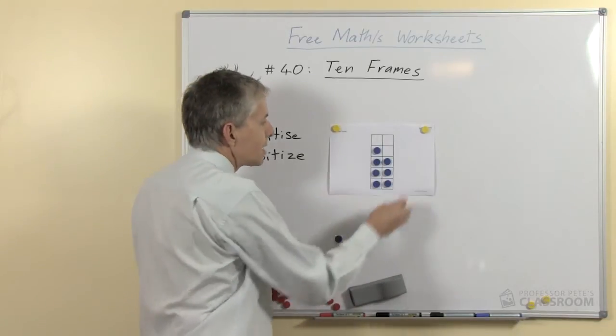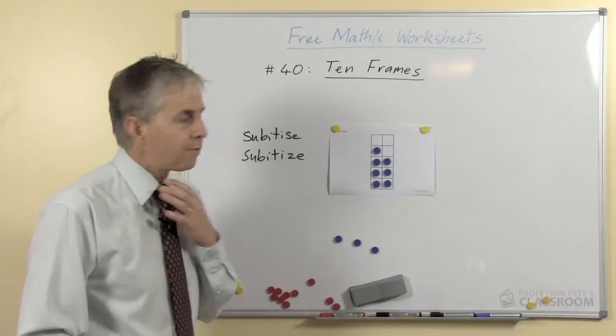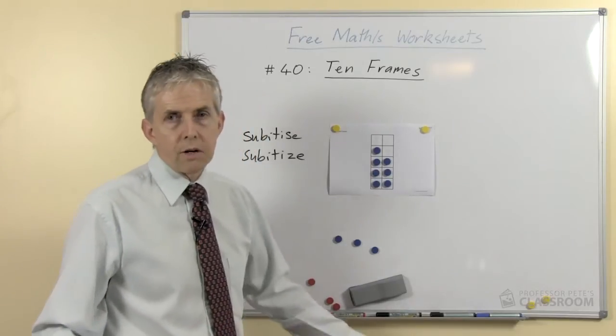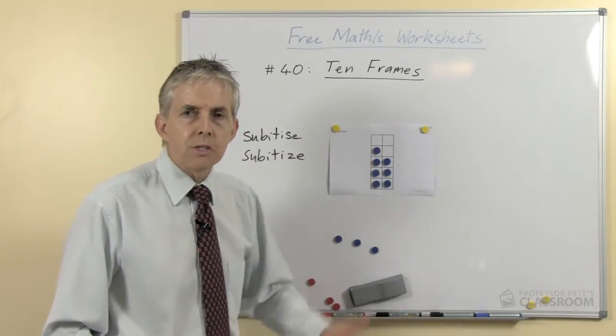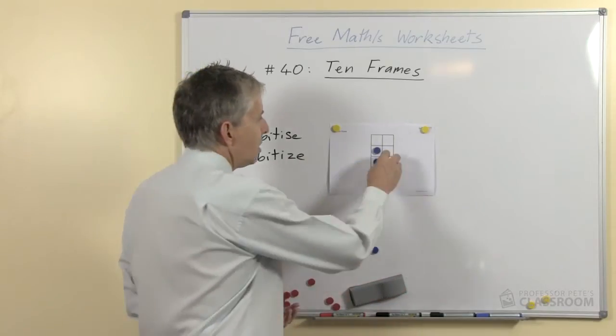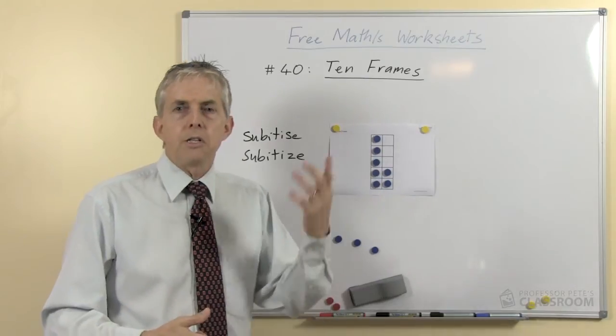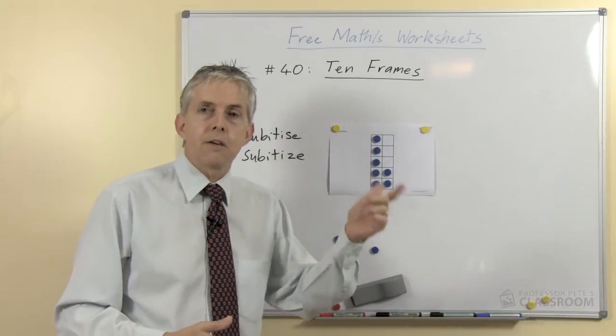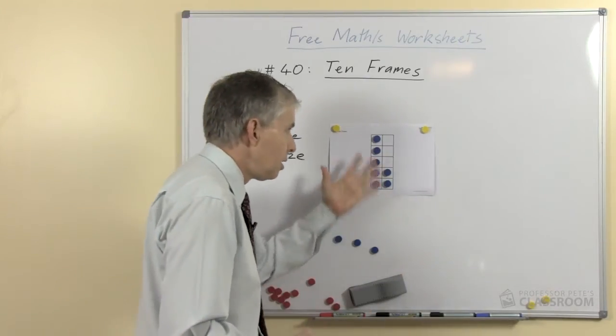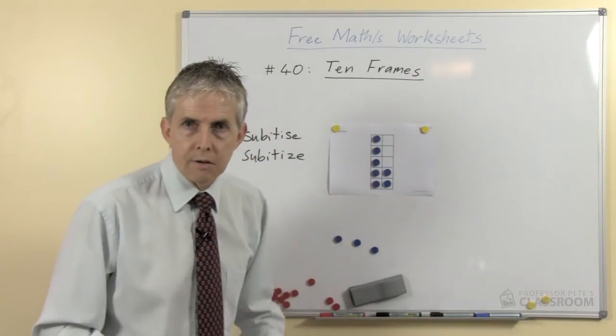So they will know for example, going back to the arrangement for seven, that four plus three is seven and they'll just know that because they've seen it so many times in the ten frame, or they will know that five and two is seven. And they won't need to use the count on strategy to start with five and count in their head six, seven and say seven, they'll just know it's seven because they've used the ten frame.